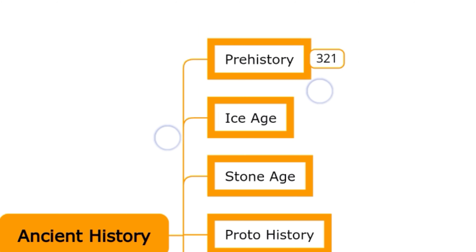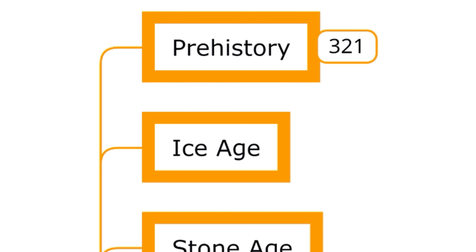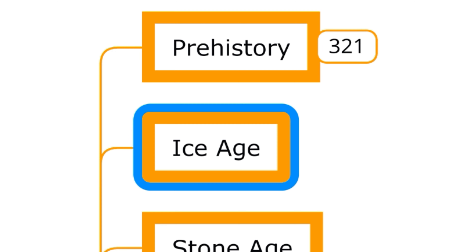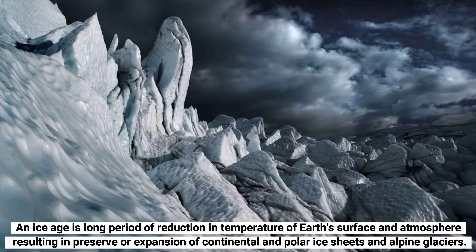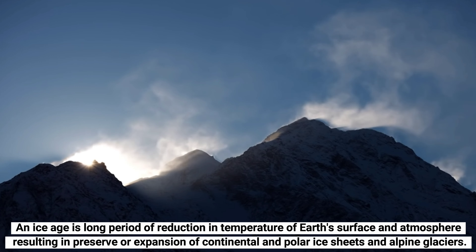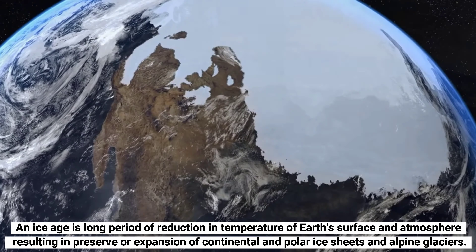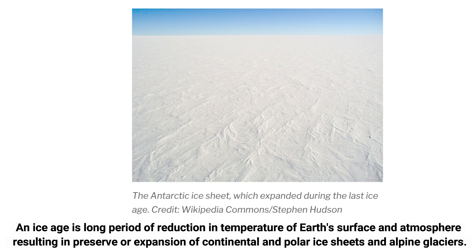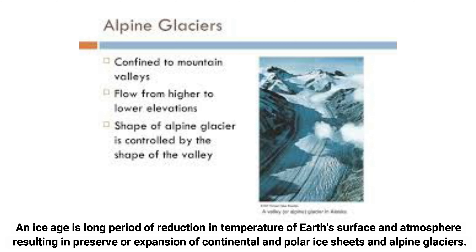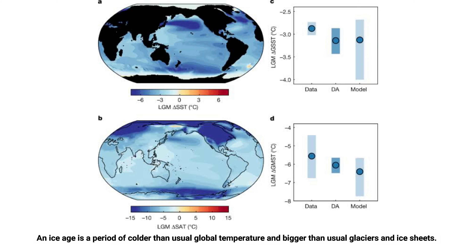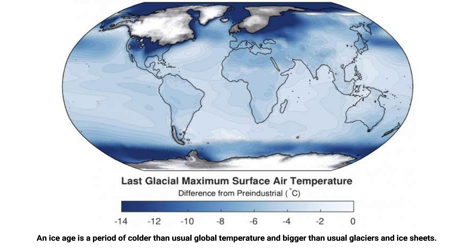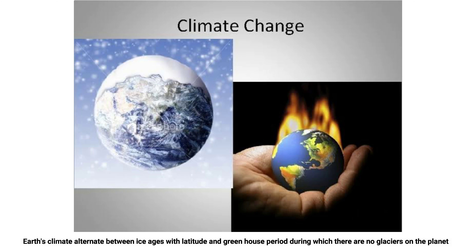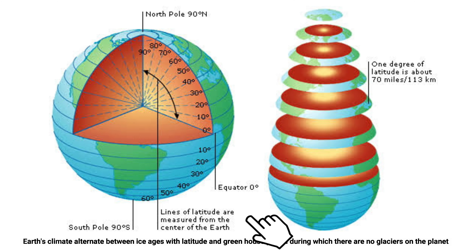In a previous video we discussed the subdivision of prehistory. Now, back to the division of history. The next age in our list is ice ages. An ice age is a long period of reduction in temperature of Earth's surface and atmosphere, resulting in the presence or expansion of continental and polar ice sheets and alpine glaciers.